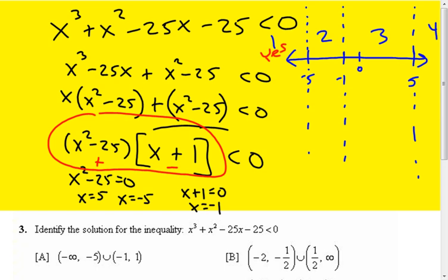I'm going to choose negative 3. Negative 3 squared minus 25 is going to be a negative number. Negative 3 is going to be negative. Negative times a negative is positive, not less than zero.